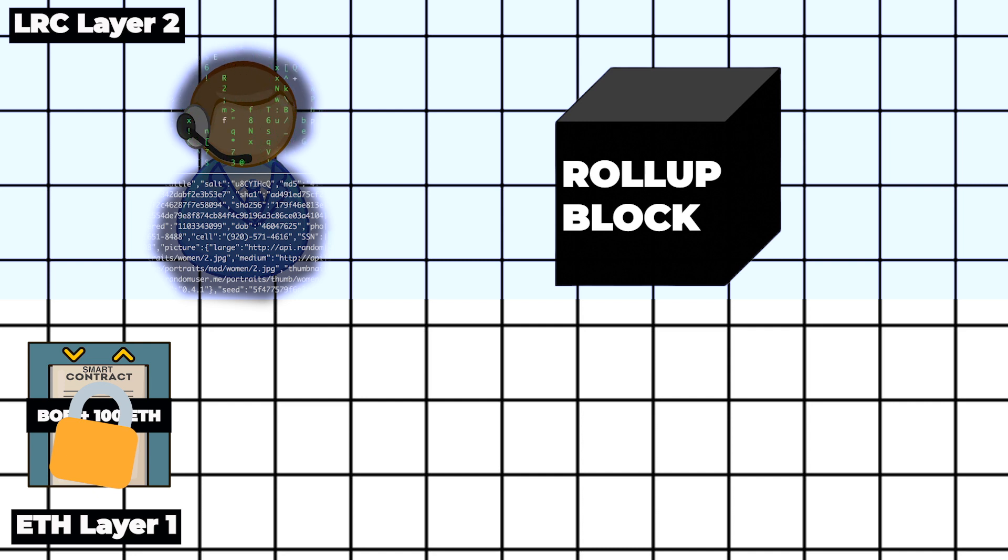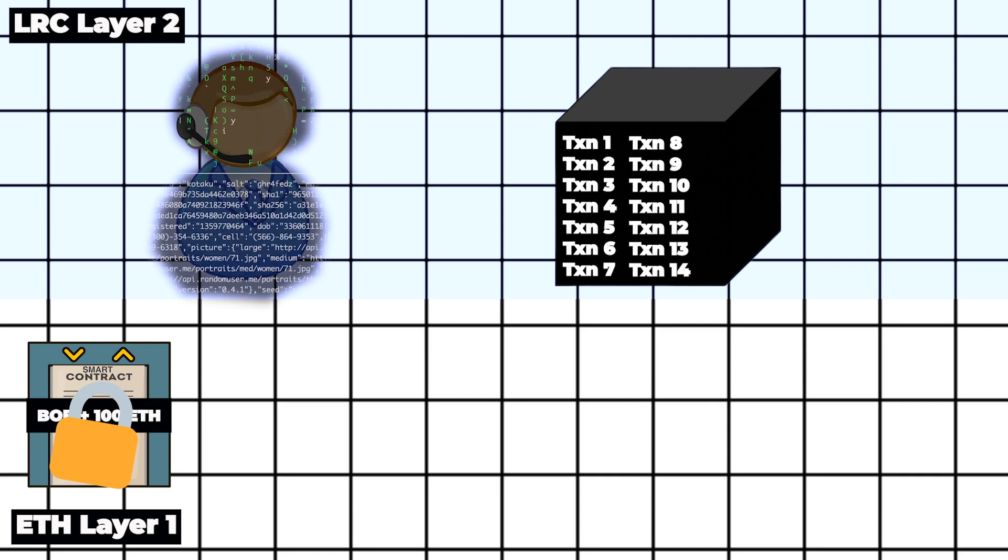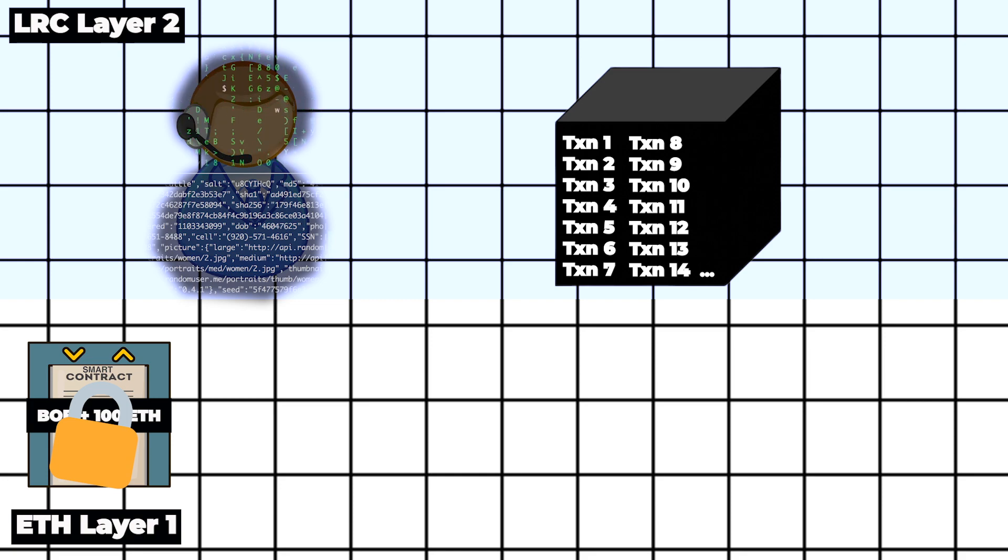A rollup block on Loopring represents an update of the Merkle tree on layer 2 and has nothing to do with blocks on Ethereum. So it groups thousands of the latest transactions, of which one is from you, sending 50 Ether to your friend.